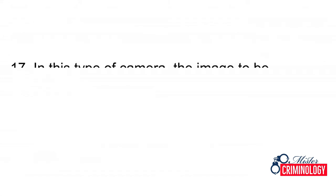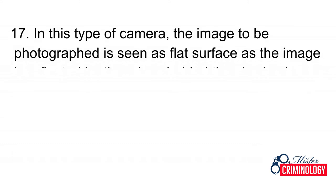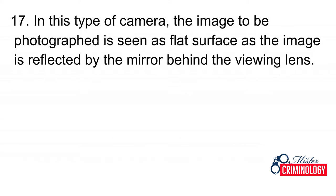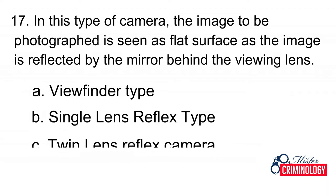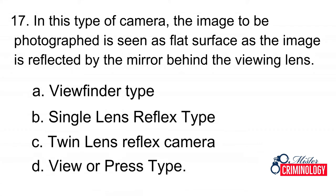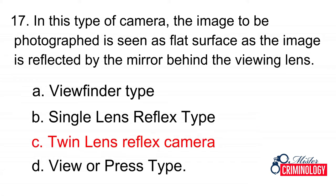Question 17: In this type of camera, the image to be photographed is seen as a flat surface as the image is reflected by the mirror behind the viewing lens. A. Viewfinder type, B. Single lens reflex type, C. Twin lens reflex camera, D. View or press type. Answer: C. Twin lens reflex camera.